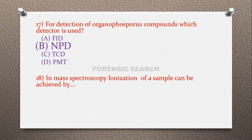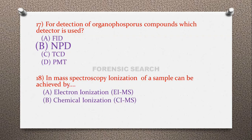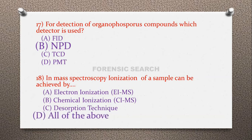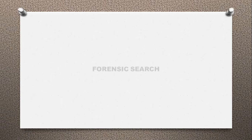Question 18: In mass spectroscopy, ionization of a sample can be achieved by — option A: electron ionization, option B: chemical ionization, option C: desorption techniques, option D: all of the above. The correct answer is option D — all of the above methods can be used for ionization in mass spectroscopy.